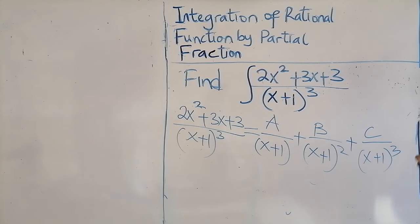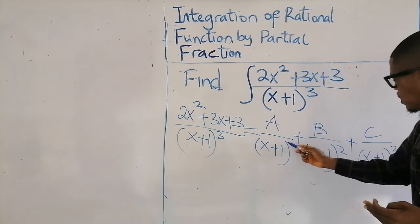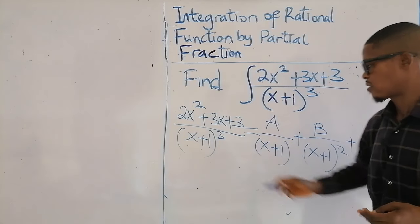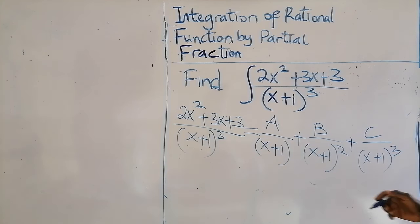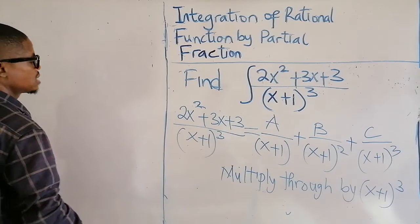If it's power 4, it will go up to B over (x+1)⁴. So on a repeated linear factor, we start from power 1, power 2, and stop at the last power. The next thing to do is to multiply through by the common factor, which is (x+1)³. The left-hand side times the common factor (x+1)³.